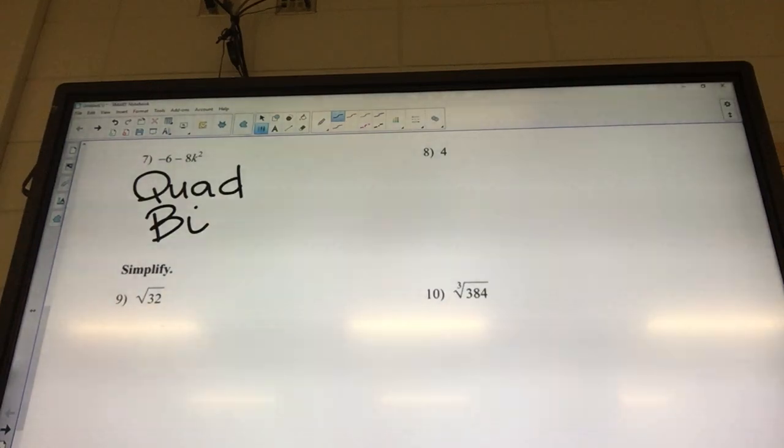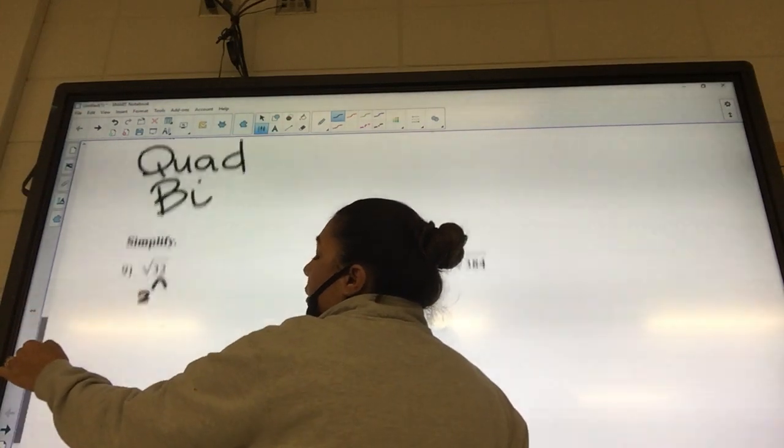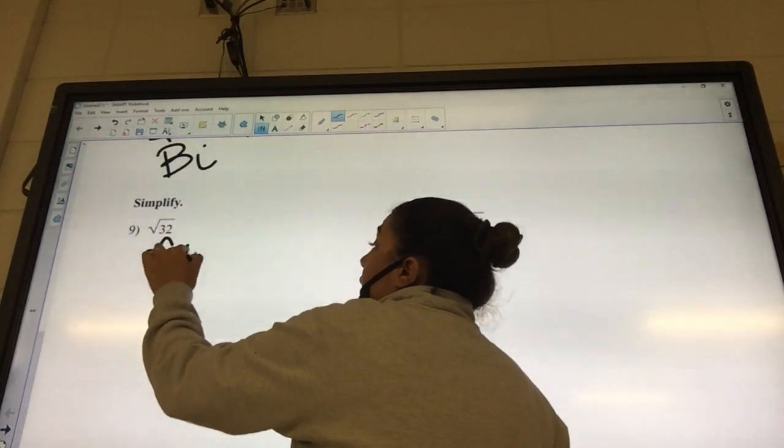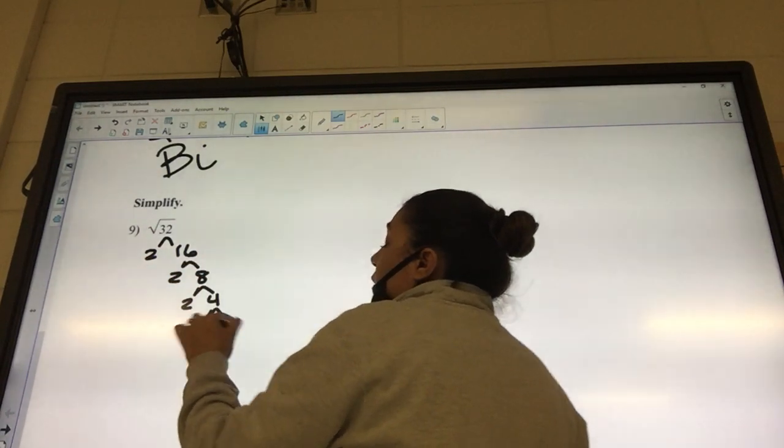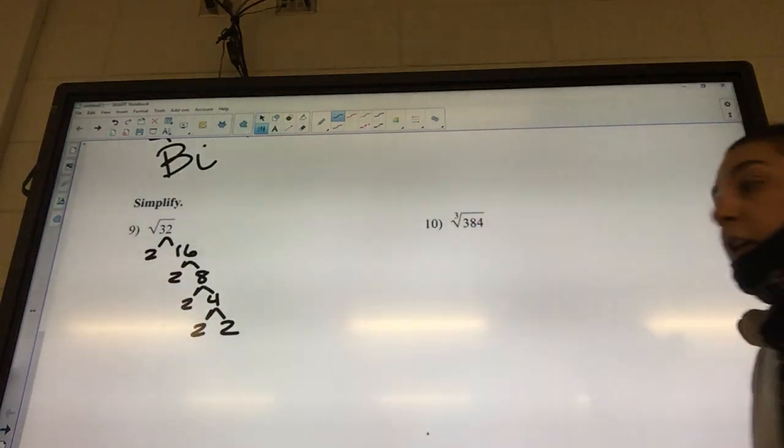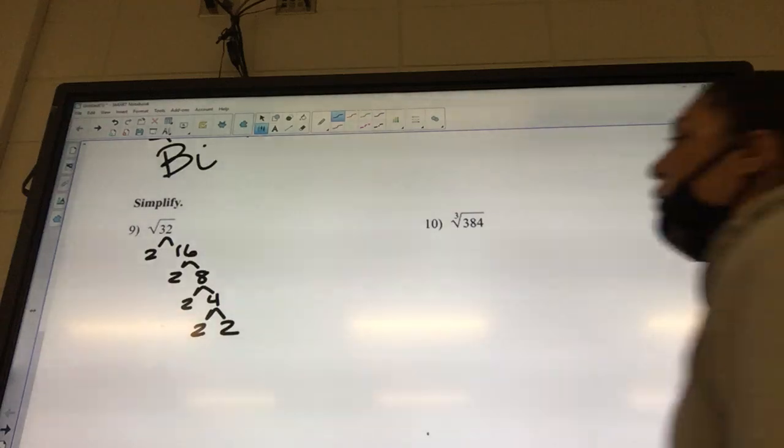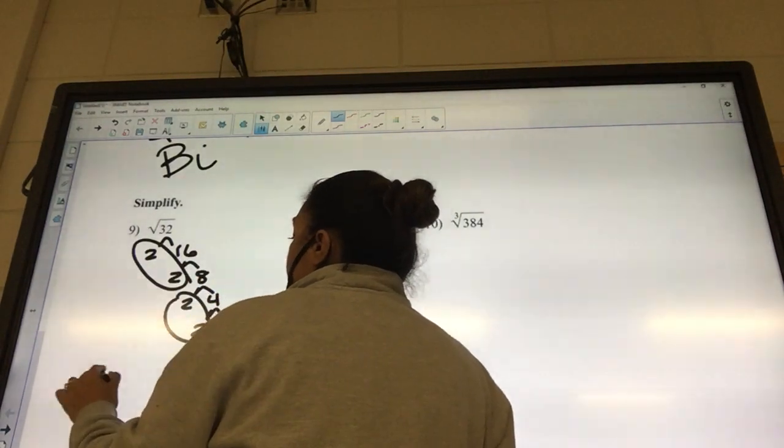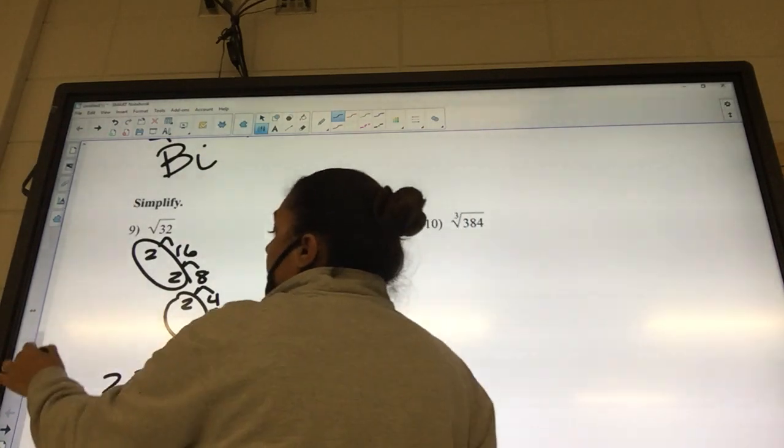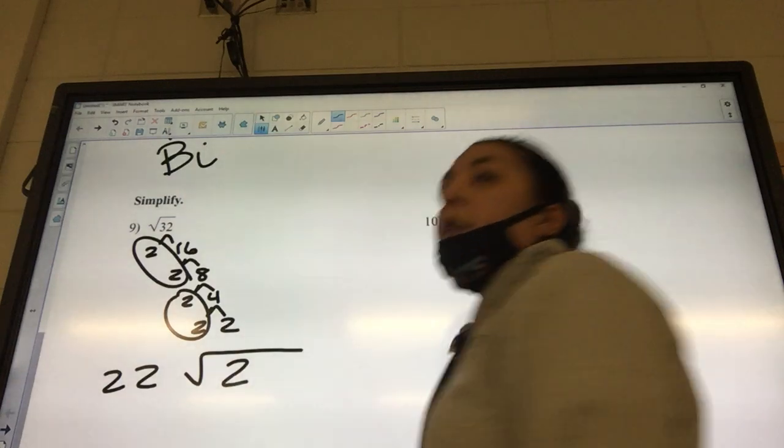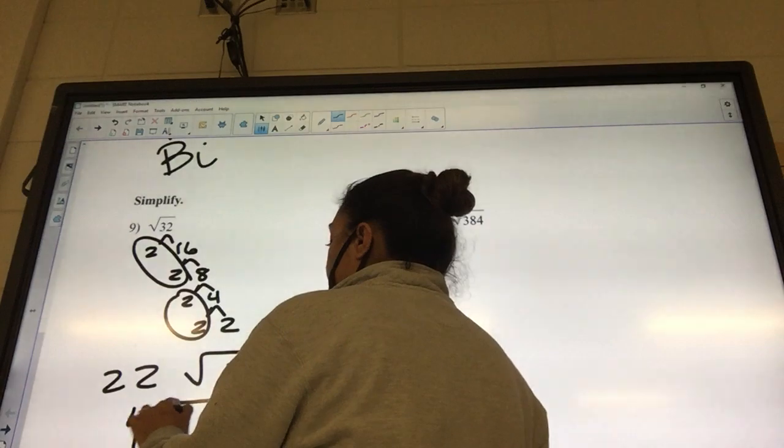Okay, nine. We need to make our tree. So two and fifteen, sixteen. Two and eight. Two and four. Two and two. What's our group number? Two, so how many groups can go? Two. So we put two of them on the outside. Who can't go? Two. What do you do with the numbers on the outside? Multiply them. So it's going to be four square root of two.